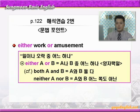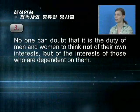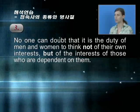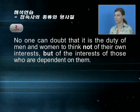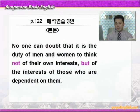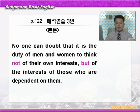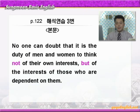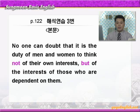그럼 3번으로 가겠습니다. 그럼 하나씩 해석을 해보죠. 'no one can doubt that' — no one은 아무도, doubt는 의심하다, 이런 뜻이니까 아무도 that 이하를 의심할 수 없다. 'it is the duty of men and women' — duty는 의무라는 뜻이니까 그것은 남자들과 여자들의 의무이다. 다시 말해 그것은 모든 사람들의 의무이다. 그것이 뭡니까? 'to think' — 생각하는 것이다. 여기 it은 가주어죠, 진주어는 to think 이하가 됩니다.